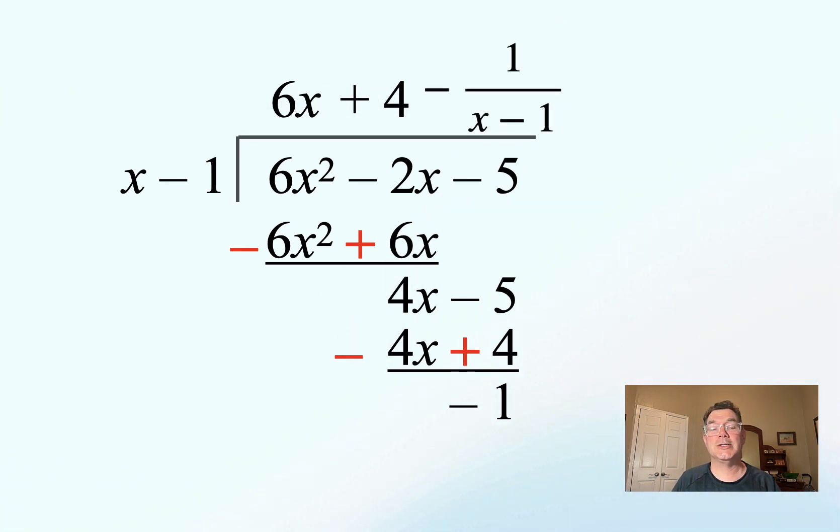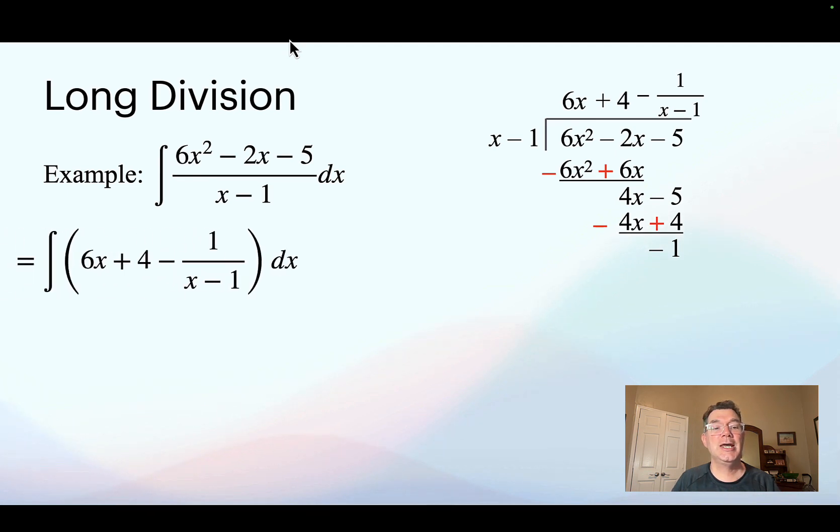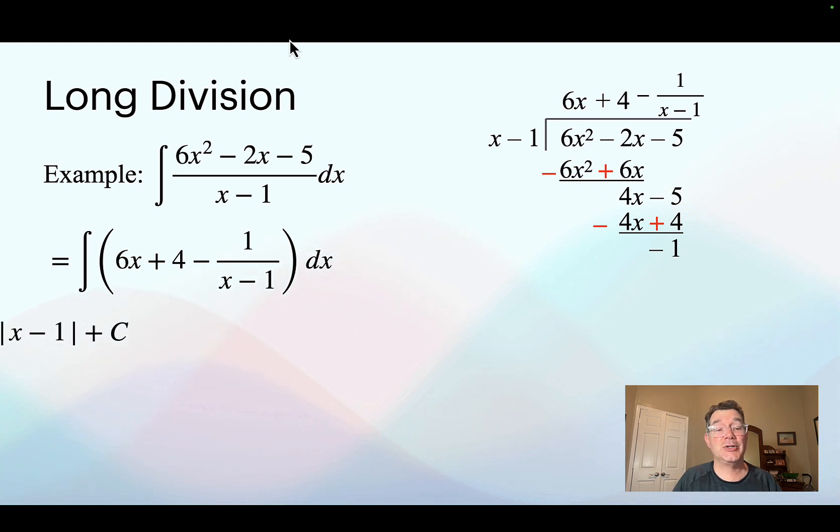That goes over what I was dividing by to begin with, which is x minus 1. So I can rewrite this question as the antiderivative of 6x plus 4 minus 1 over x minus 1. And that's a lot easier to do. I'll get 3x squared plus 4x minus the natural log of x minus 1 plus c.